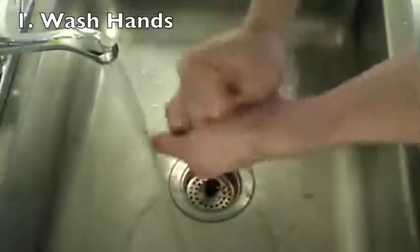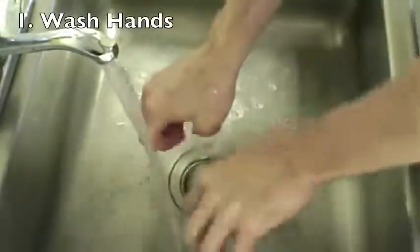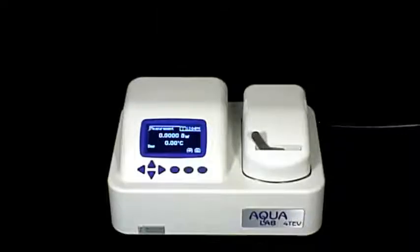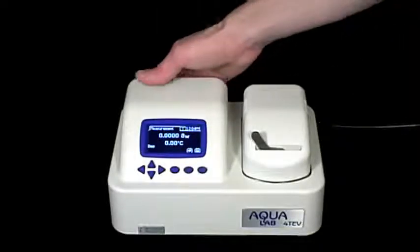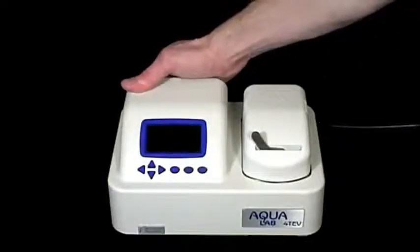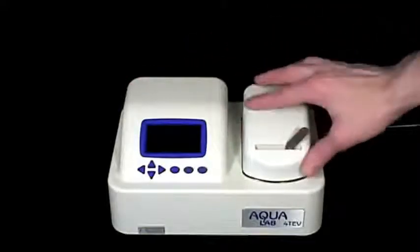Let's get started by washing our hands first. This ensures that oils that naturally occur on the hands do not interfere with the cleaning process. Once you have washed your hands, turn off the power to your Aqualab, and then open the lid to the sensor chamber.